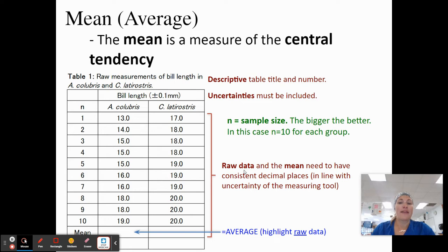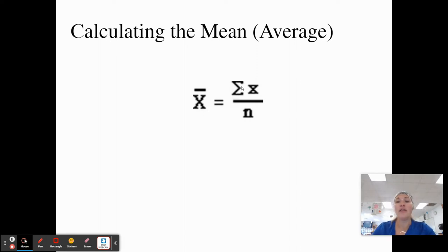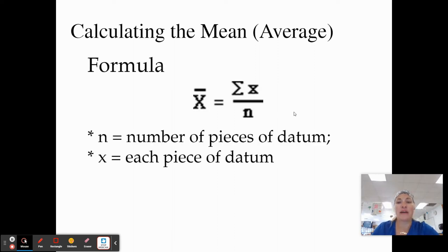The mean needs to be consistent with those decimal places. Our raw data is everything measured to the tenth, so when we do an average, we want to measure that to the tenth as well. Our uncertainty is plus or minus 0.1 millimeter, also to the tenth. When calculating our mean — X with a line over it — we use the formula: the sum of all values divided by N, our sample size. N is the number of data points and X is each individual piece of data.